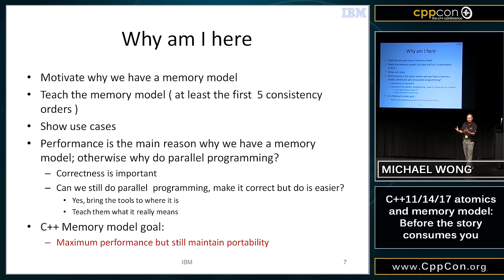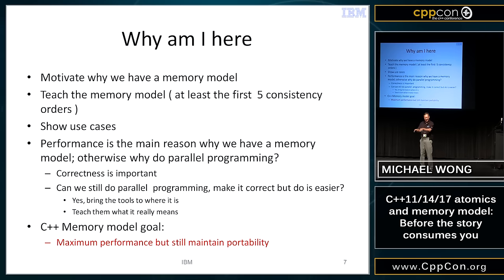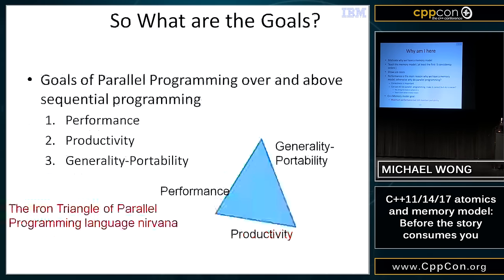At one point, driving a Model T Ford was hard — the accelerator wasn't at your foot, it was beside you. And yet today I have a car with a billion functionalities that can almost drive itself with cameras and radars. Complexity has vastly increased, and yet I have no trouble driving it. Parallel programming might be viewed in the same way. The goal of the C++ memory model is maximum performance with portability.